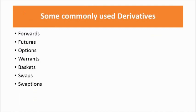Now let us see some of the commonly used derivatives. They are: forwards, futures, options, variants, baskets, swaps, and swaptions. There are still further many complex derivatives. These are some of the simpler derivatives that we are going to discuss in future sessions. As of now, this is an introductory session, so I am just introducing the various products to you.